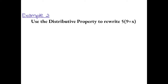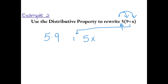Example 2: use the distributive property to write 5 times the sum of 9 plus x. So again, you could think of the number on the outside as you, and you have to say hi to your first friend — so 5 times 9 — and then you have to say hi to your second friend, which would be 5x. Then bring over the symbol in the middle, which is a plus sign.